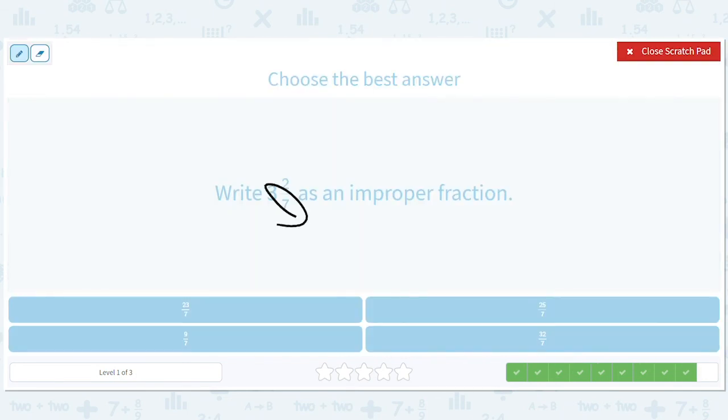And 21 plus 2 divided by 7 is 23 divided by 7.